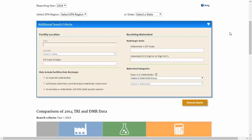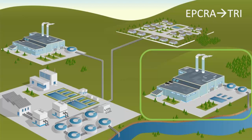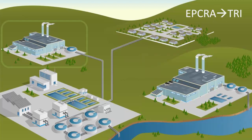Now let's review some background information on TRI and DMR data. The EPA collects TRI data under the Emergency Planning and Community Right to Know Act. EPCRA was created to help communities plan for emergencies involving hazardous substances and to provide public access to information on chemicals at facilities, their uses, and releases to the environment. To support this effort, EPA's TRI collects toxic chemical use and release data from facilities and provides this information to the public. Some facilities that report to TRI may discharge directly to receiving waters or may discharge indirectly — facilities that transfer wastewater to municipal wastewater treatment plants.